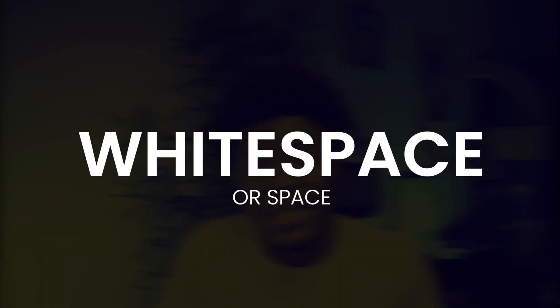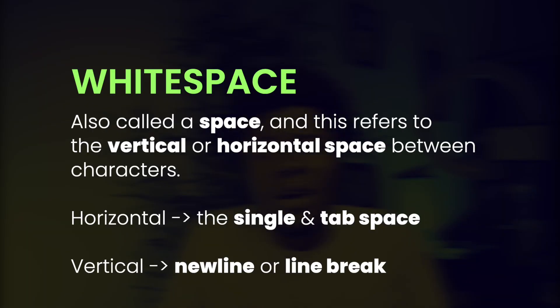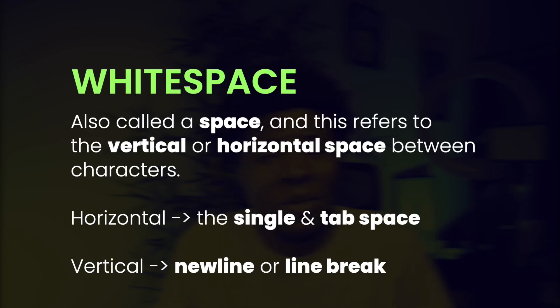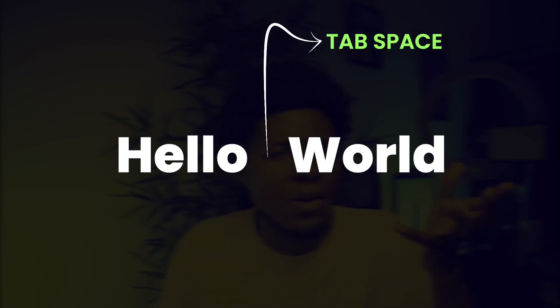Another term to understand is whitespace, or you can call it a space, which refers to a vertical or horizontal space between characters. For the horizontal space, you can have the single space which you get by clicking the space bar on your keyboard — this is the space between the words 'hello' and 'world' on the screen. You can also have the tab space, which is a longer horizontal space you get by clicking the tab key. It's just one tab space, which is longer than a single space.